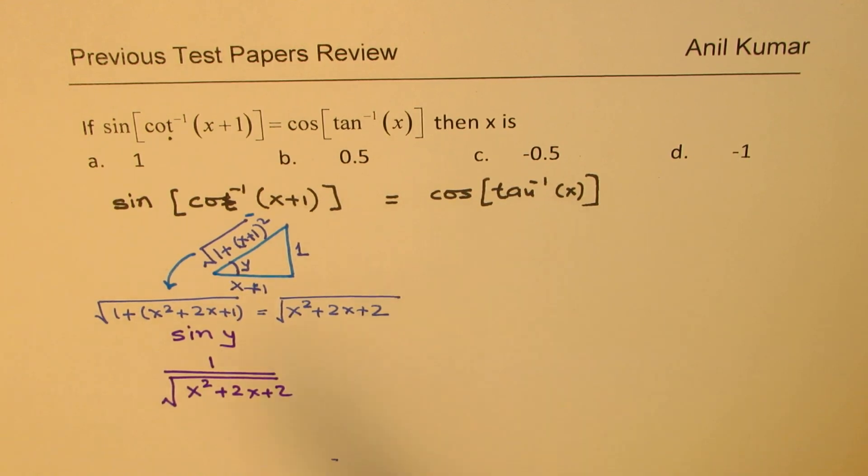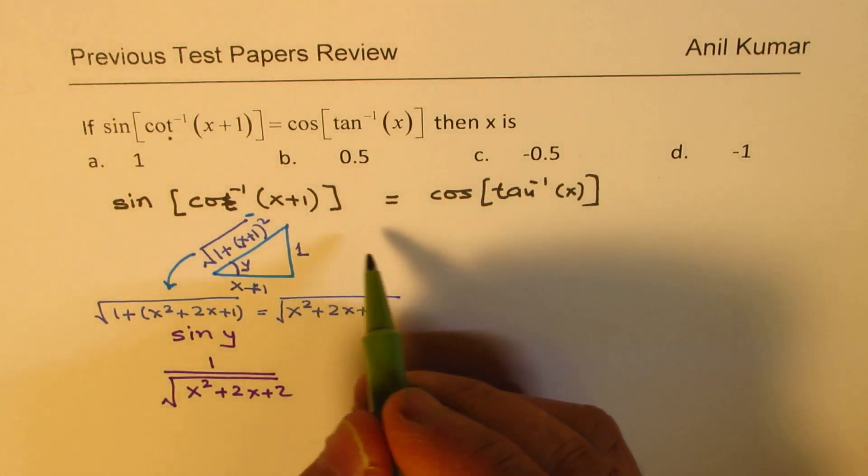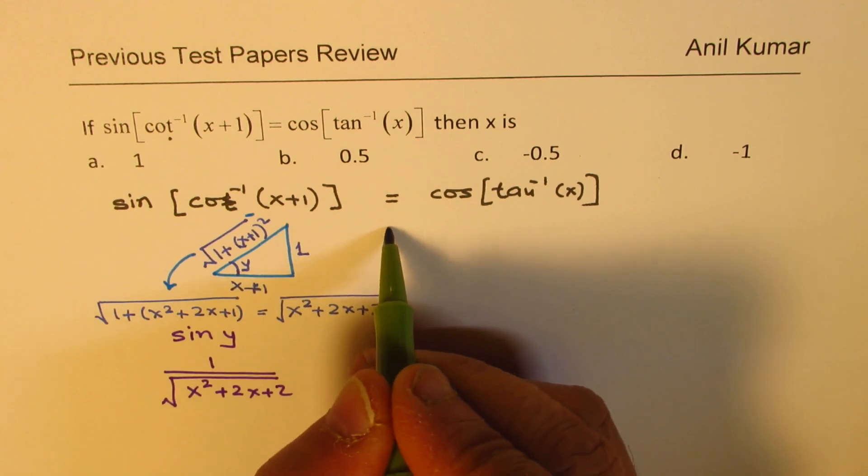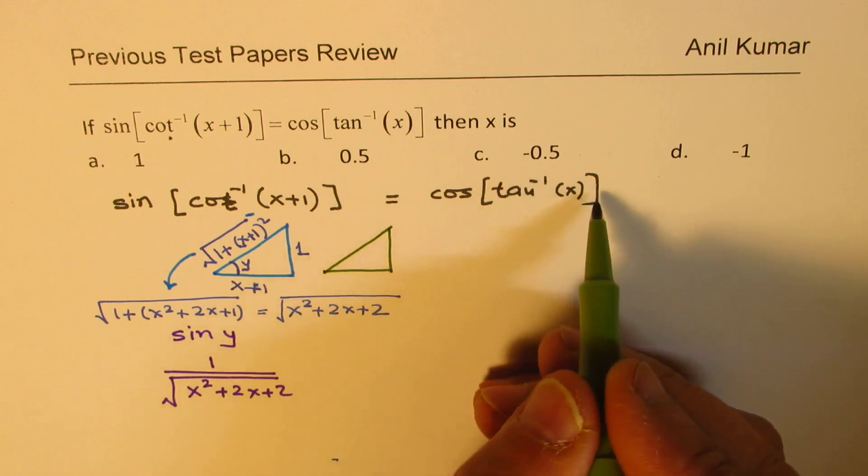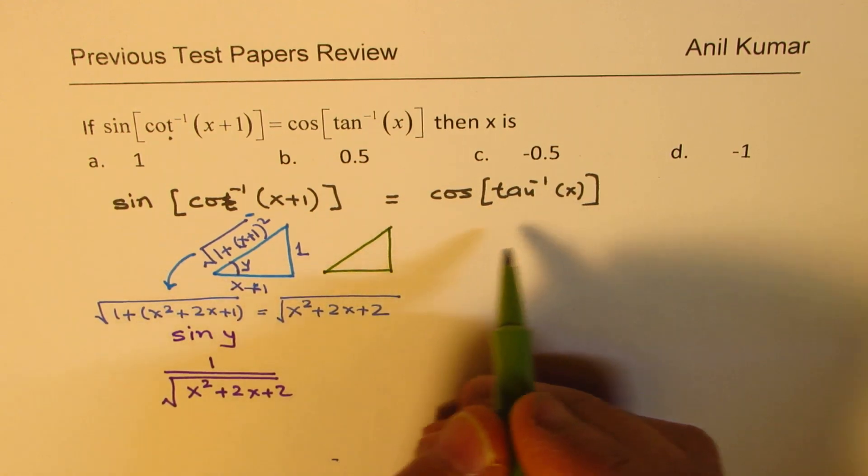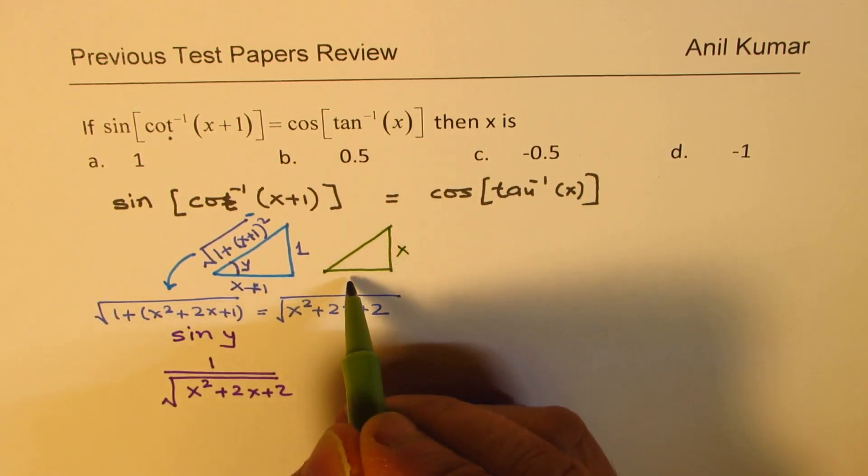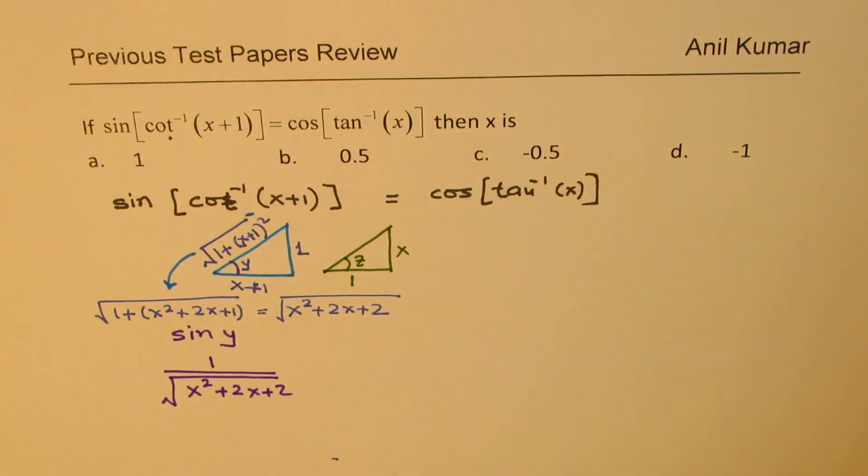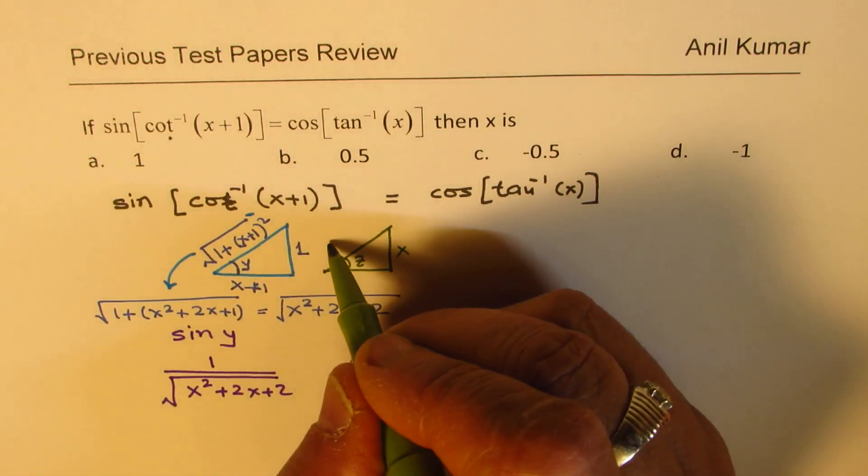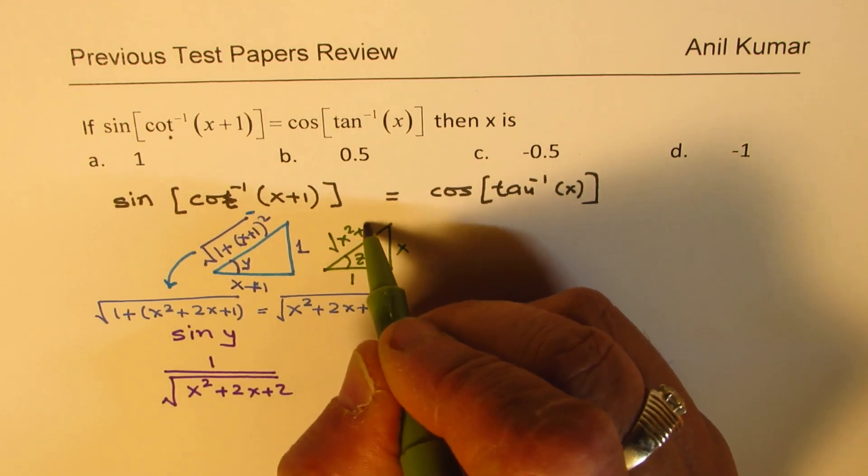Now let us work on the right side. Let me sketch a triangle for the right side also. When we see that this angle is tan inverse x, that means the sides are x and 1. Let us call this angle z. So this hypotenuse will be square root of (x squared plus 1).